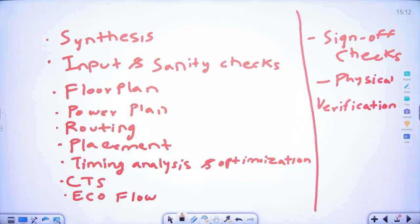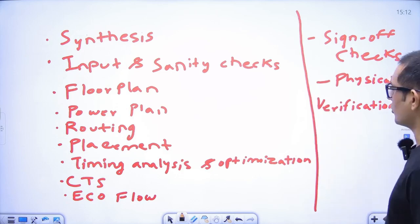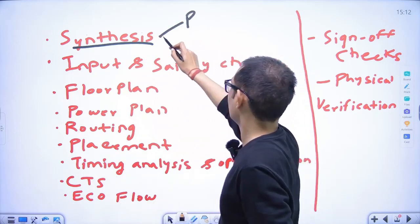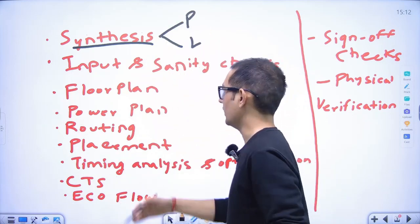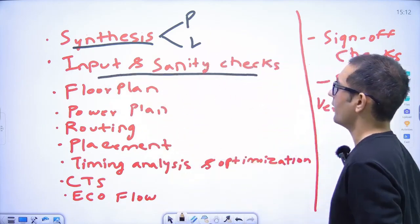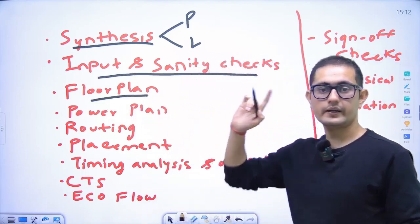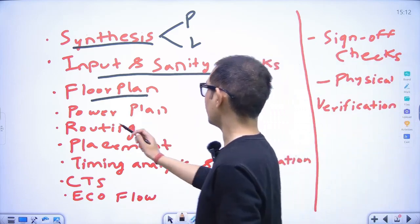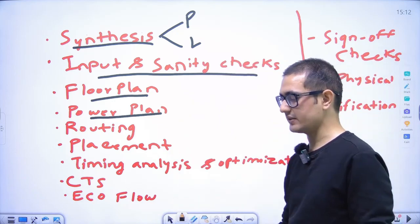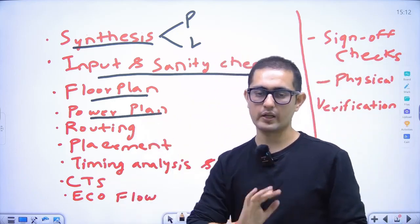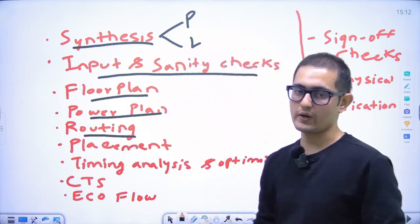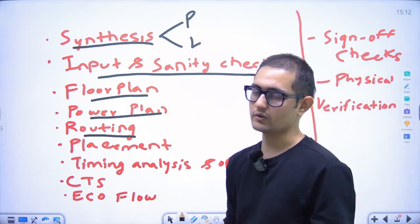Other skills are also required. You should know the knowledge of synthesis — what is synthesis, physical synthesis, logical synthesis, steps of synthesis flow, input and sanity checks. You should know floorplanning with Cadence tool knowledge. Then power planning with implementation in Cadence, Synopsys, or Mentor Graphics tools — whichever tool you have in physical design. Then routing — what is routing and how we implement it in Cadence or Synopsys.